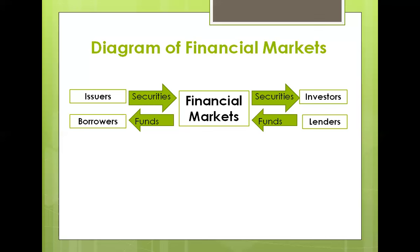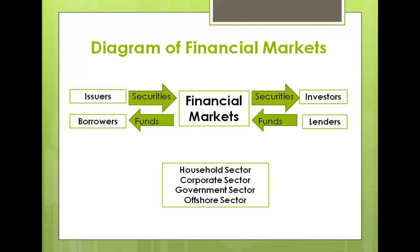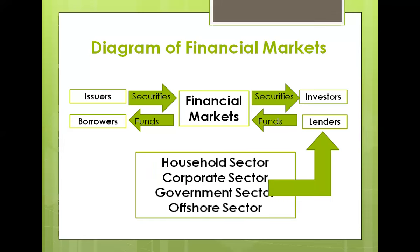So who are these issuers, borrowers, investors, or lenders? They can either be the household sector. The household sector, those who have excess funds, can buy stocks, shares of stocks or securities in the financial markets. The corporate sector can either be an issuer or an investor, or also both can be a borrower or a lender. The government sector and the offshore sector. So these form parts of the diagram of financial markets, as you can see here.